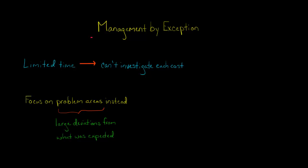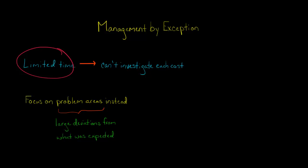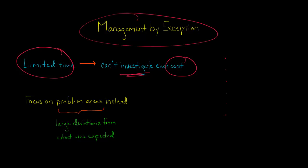In this video, we're going to discuss management by exception. Managers have a limited amount of time — they can't go investigating every single problem that a company has. For example, if we're talking about cost control, managers can't go through every single line item on the income statement and see if the cost was managed well. So instead, they can use a philosophy called management by exception, where they just focus on problem areas.